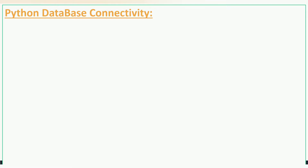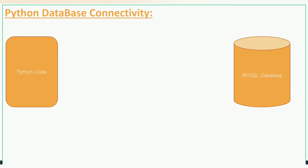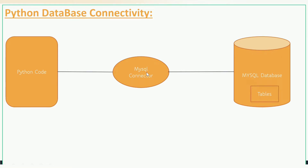Let's understand how we can connect with the database using Python code. We have a Python code written in the PyCharm editor. We also need access to a database — in our tutorials we are going to use MySQL. The code cannot directly connect to the database; there should be a MySQL connector. With the help of the MySQL connector we can connect to the database, and it acts as a middleware between the Python code and the database.